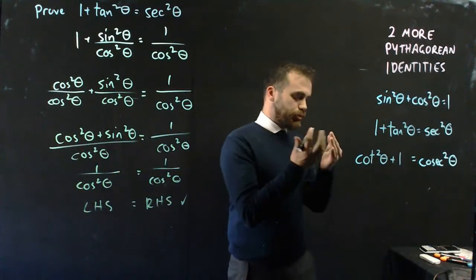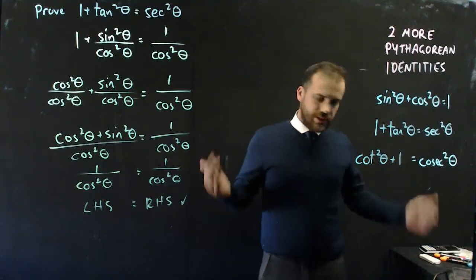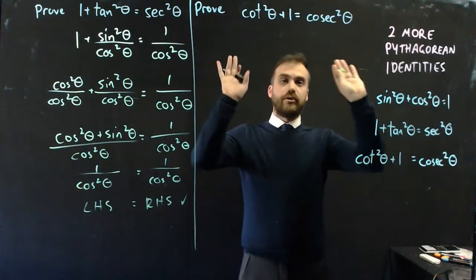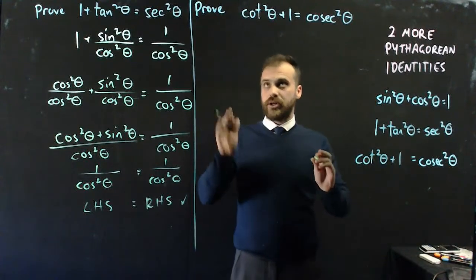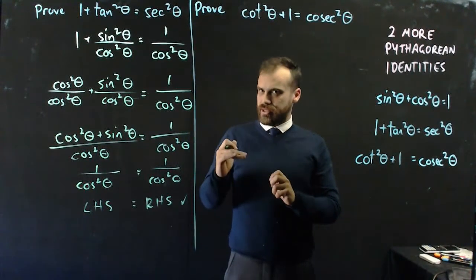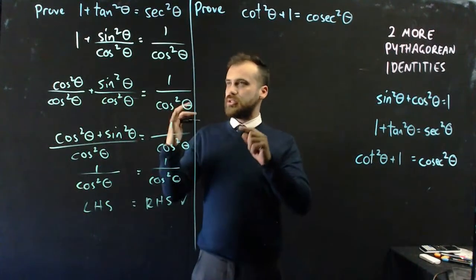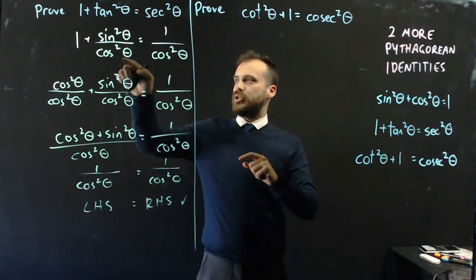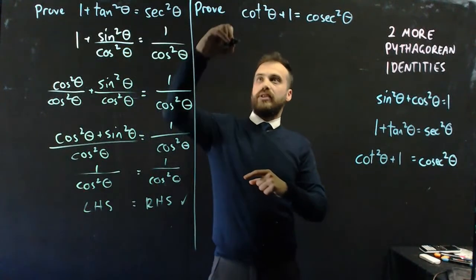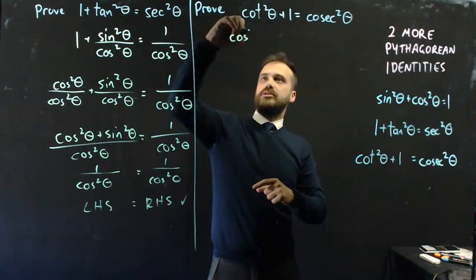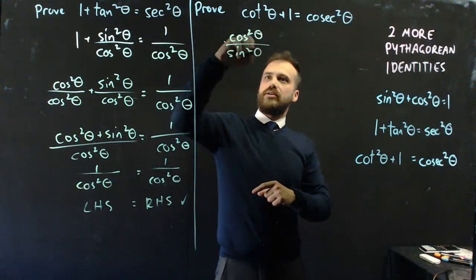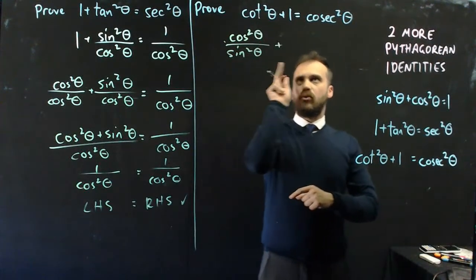We can also prove the second identity using a very similar method. You might want to pause the video now and try to prove this yourself, but I'm going to jump straight into it. Cot squared theta is 1 over tan squared theta. Now, tan squared theta is sine squared theta over cos squared theta, so 1 over that would be the reciprocal, giving us cos squared theta over sine squared theta plus 1.